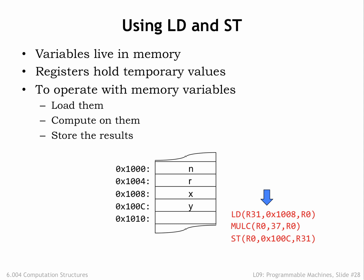Here's the example we saw earlier, where we needed to load the value of the variable X from memory, multiply it by 37, and write the result back to the memory location that holds the value of the variable Y. Now that we have actual Beta instructions, we've expressed the computation as a sequence of three instructions.